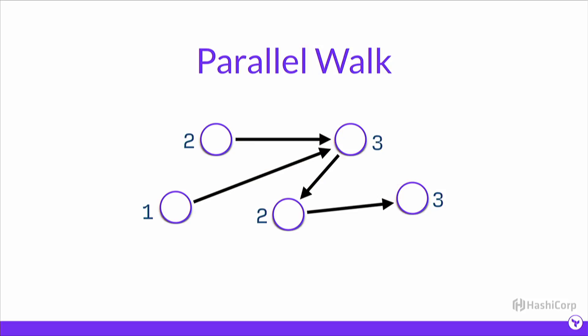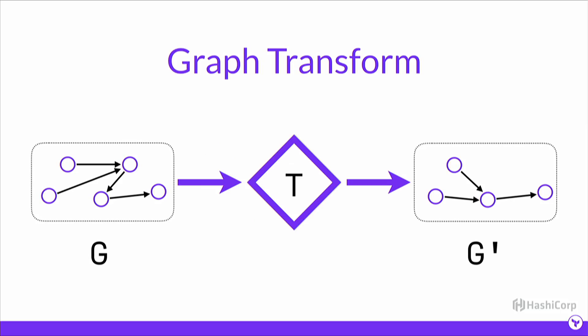A parallel walk is something we're going to talk very specifically about in Terraform. This demonstrates the fact that a walk is just an abstract operation where you can actually visit multiple nodes at the same time. And finally, a graph transform is the last operation you need to understand before we dive into Terraform's core. A graph transform is an operation that takes a graph as input and produces a graph as output — it might change the graph by adding or deleting edges, adding or deleting nodes, or changing edges. It's a purely functional operation, and it's going to be very important as we show you how Terraform uses graph theory in its core.